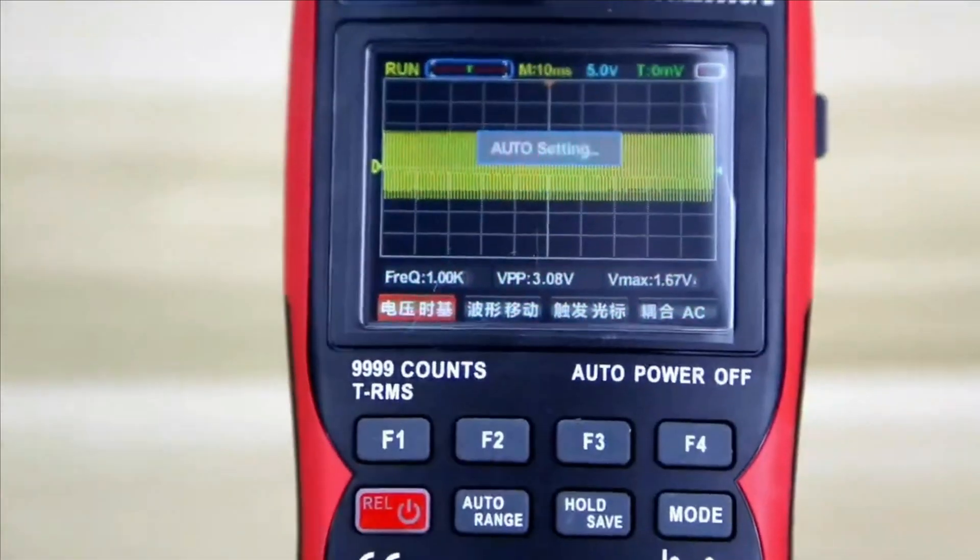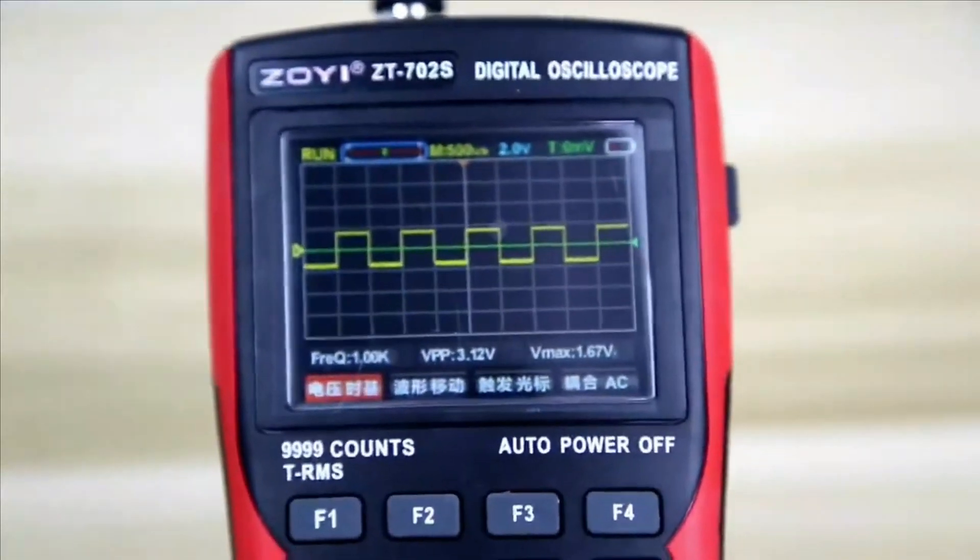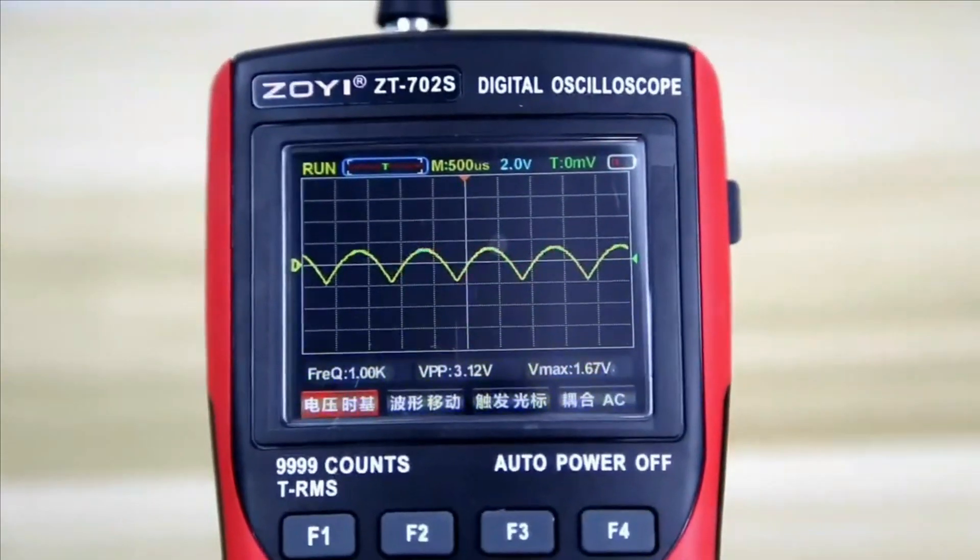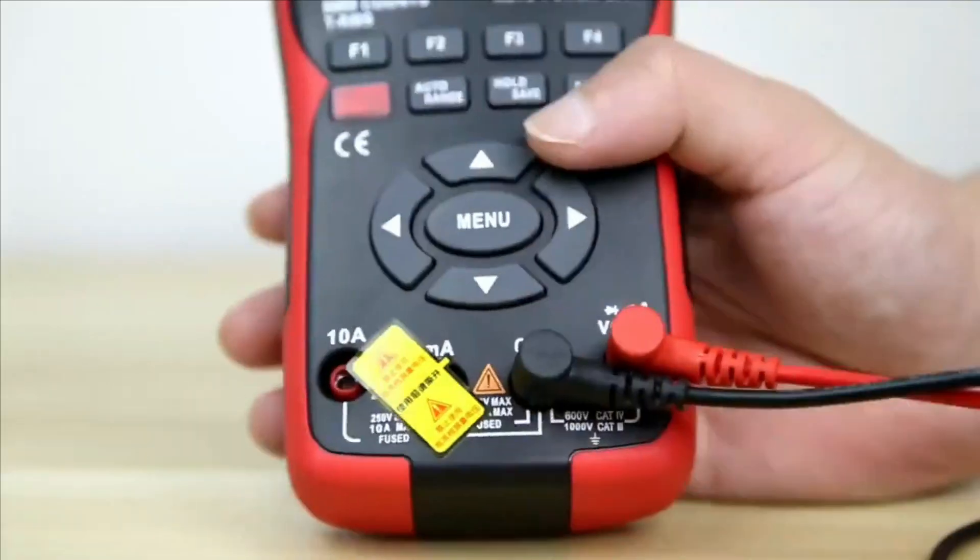The device has a 9999 counts display, true RMS capability, real-time sampling, and a 10 MHz broadband.